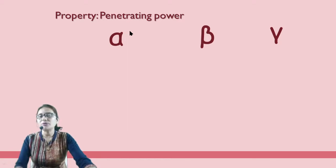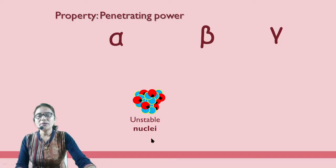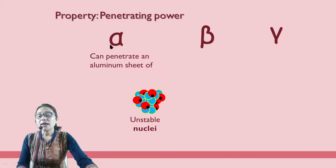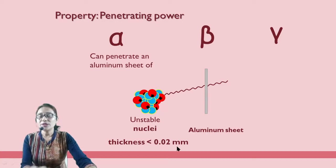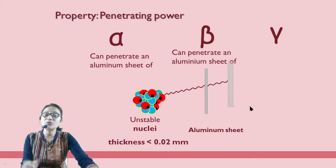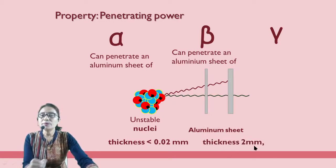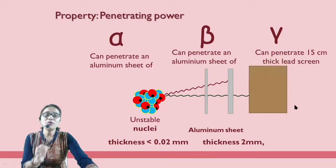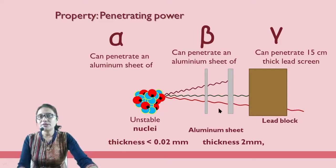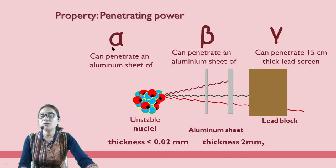Next is penetrating power. Alpha particles can penetrate an aluminum sheet of thickness less than 0.2 millimeters. Beta particles can penetrate an aluminum sheet of thickness less than 2 millimeters. Gamma particles can penetrate through a 15-centimeter thick lead screen. So gamma radiation has much greater penetrating power than alpha and beta particles.